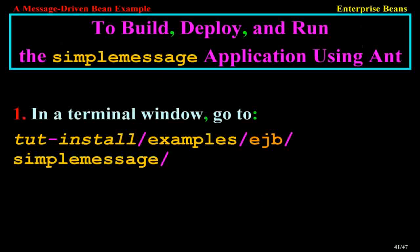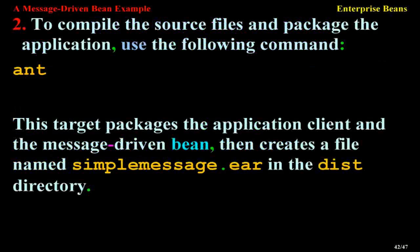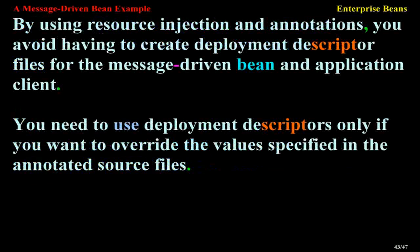To build, deploy, and run the simple message application using Ant: in a terminal window, go to TUT install examples EJB Simple Message directory. To compile the source files and package the application, use the command 'ant'. This packages the application client and the message-driven bean, then creates a file named simple-message.ear in the dist directory. By using resource injection and annotations, you avoid having to create deployment descriptor files. You need to use deployment descriptors only if you want to override the values specified in the annotated source files.